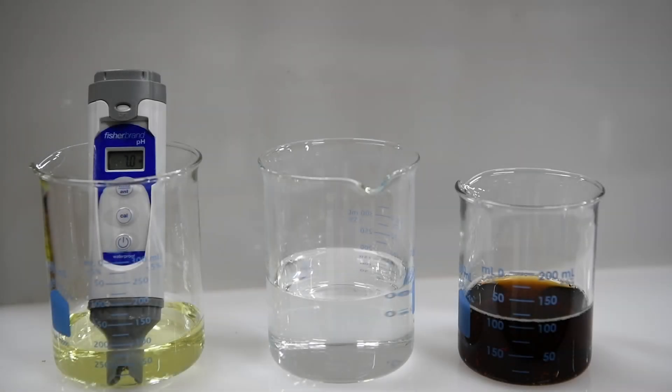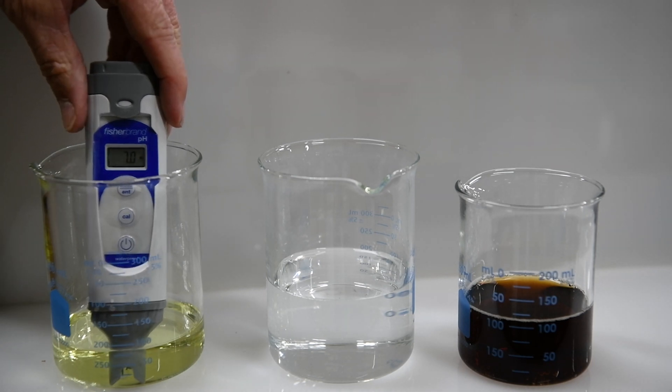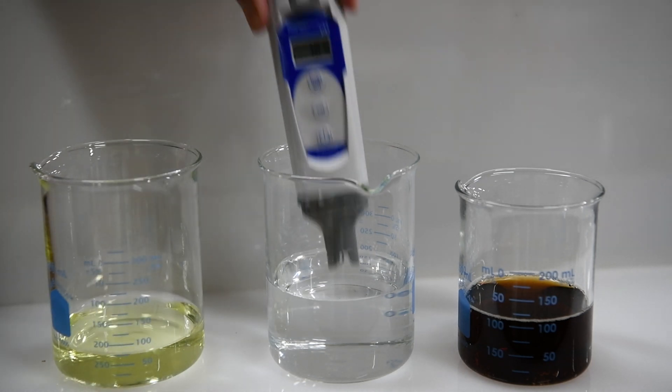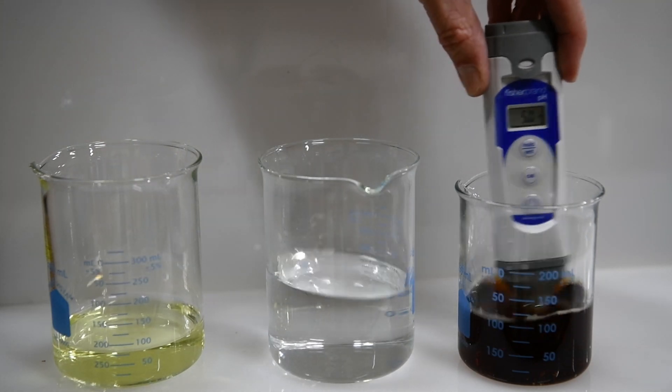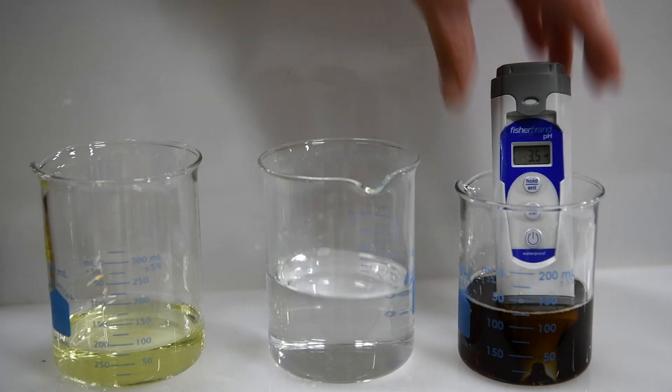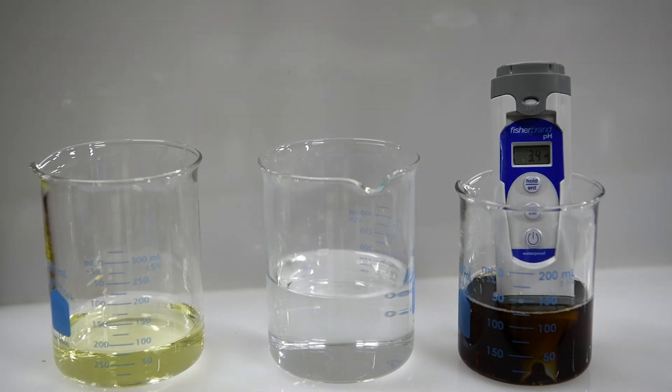Now we're going to start our pH meter tests. The pH meter normally gives much more accurate results than cabbage juice. You can see the pH meter right now is at a neutral value of 7. It's in a buffer solution, which keeps it at a pH of 7. So to test our first sample of Coke, we'll rinse the pH meter off in some water, place it in the Coke, and give it a moment to take a reading. And it appears that the pH is 3.4.